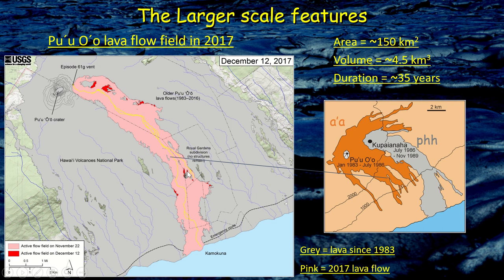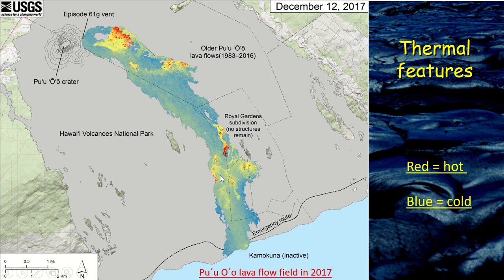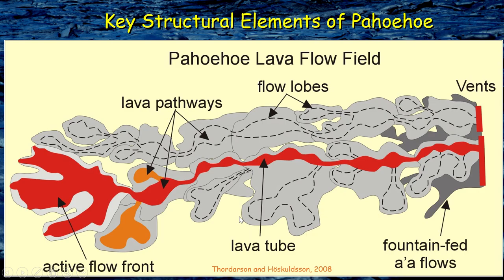This demonstrates one very important thing about any lava flow field that is forming: only a small portion is actually moving lava — most of it is stagnant or solidified lava. This is even better demonstrated on a thermal image of the same flow field, where red areas are hot and blue areas are cold. Even the transport system drawn in yellow lines doesn't show up on the thermal image — meaning the transport system is thoroughly insulated.